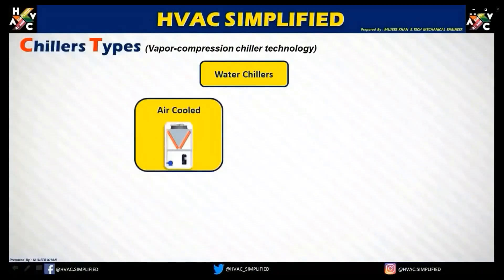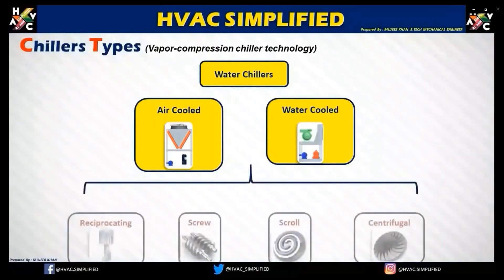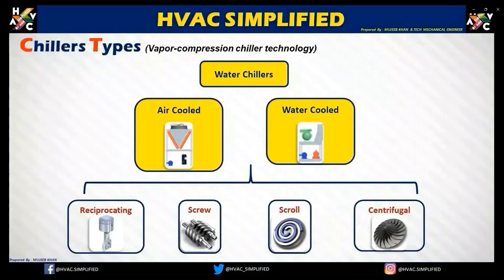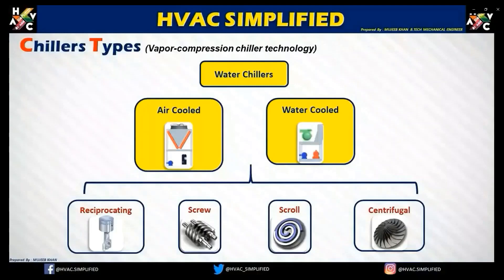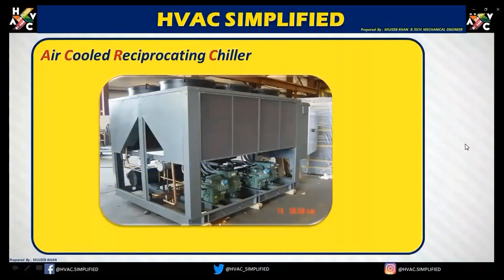Chillers are also known as vapor compression chillers. Any chiller is classified as a water chiller, and any water chiller is known as either an air-cooled chiller or a water-cooled chiller. The major components of both air-cooled and water-cooled chillers include a compressor, which can be reciprocating, screw, scroll, or centrifugal, depending on classification, capacity requirement, and build.